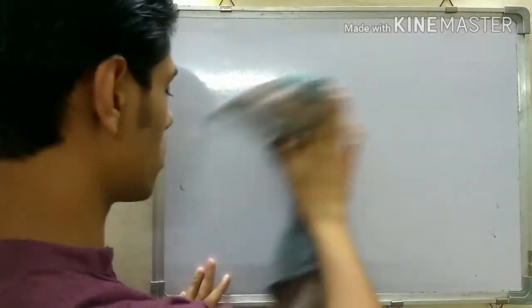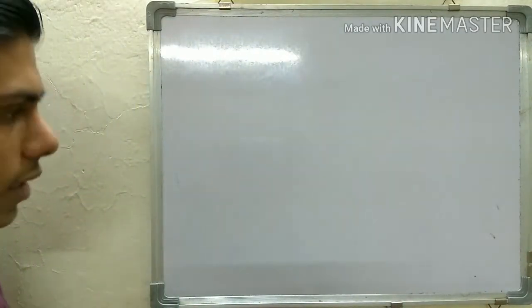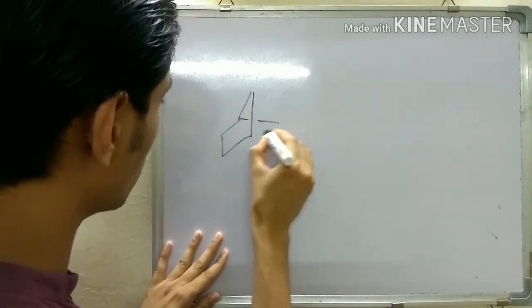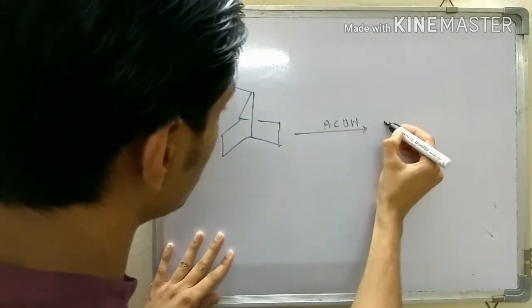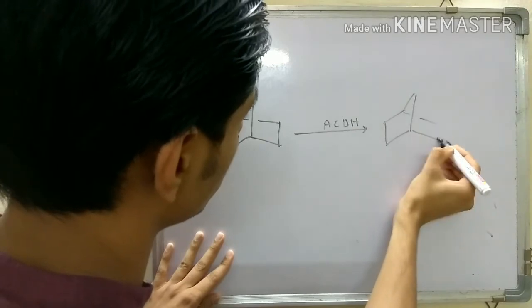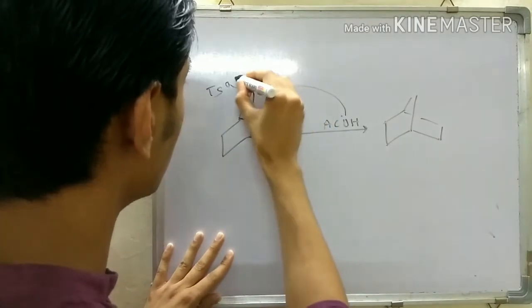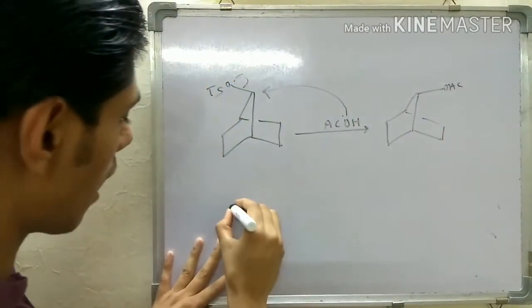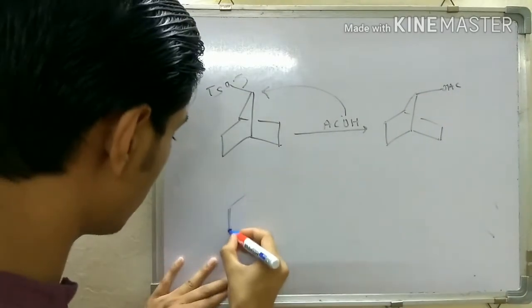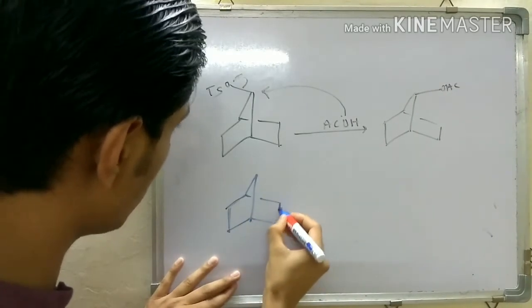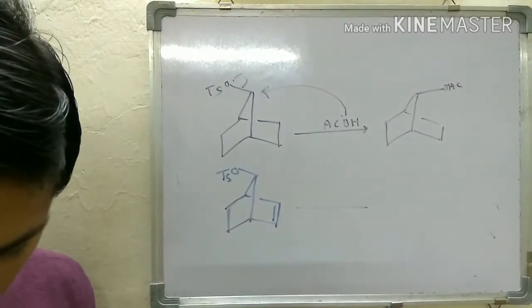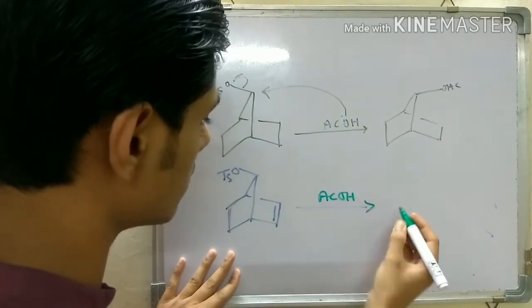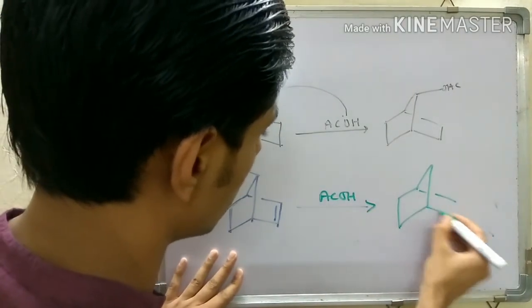So far we have seen three types of participations possible. One is your normal pi bond that can participate in neighboring group participation, and here is another example of that. If you have this compound with an OTs group and react it with acetic acid, you get this product where acetic acid attacks. Now let's say you have a slightly different starting material where you have a double bond here and an OTs group here - if you react the same thing with acetic acid, you get this product.